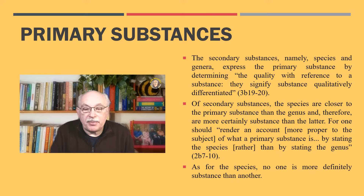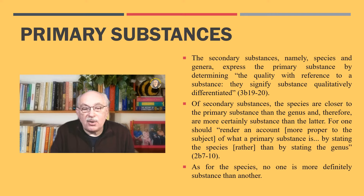Accordingly, only the secondary substances — namely species and genera — express the primary substance by determining, I quote, 'the quality with reference to a substance; they signify substance qualitatively differentiated.' Furthermore, of secondary substances, the species are closer to the primary substance than the genus and therefore are more certainly substances than the latter, for one should, I quote, 'render an account more proper to the subject of what a primary substance is by stating the species rather than by stating the genus.'